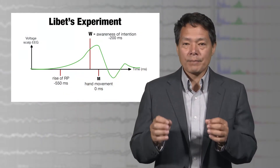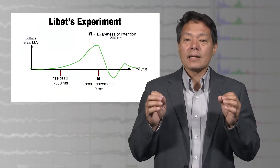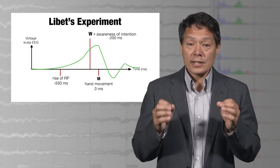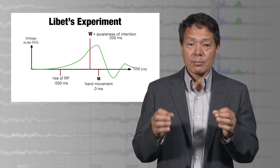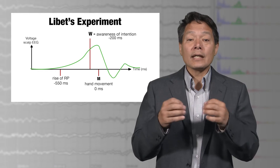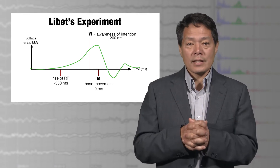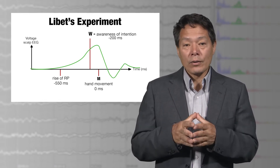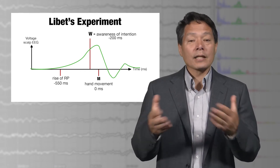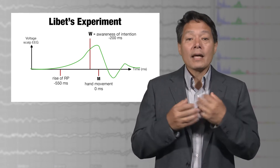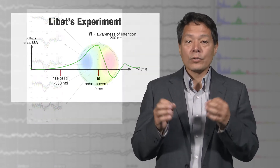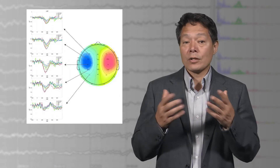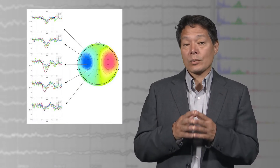Libet inferred from his data that the neural processes that generate the readiness potential cause the subsequent conscious proximal will, making it only illusorily causal of the subsequent motor act. Given the results of our own and others' recent experiments, I conclude that neither the readiness potential nor the lateralized readiness potential arise from neural processes causal of conscious willing.